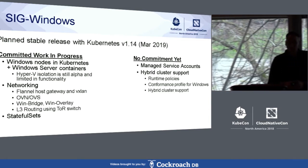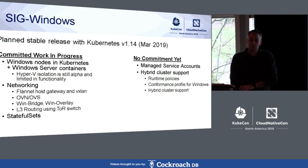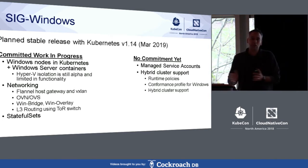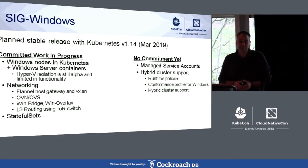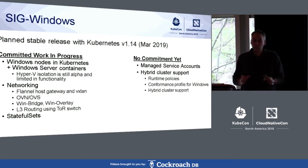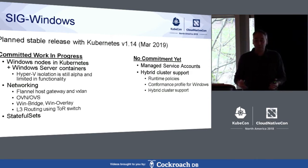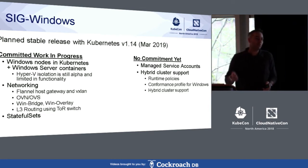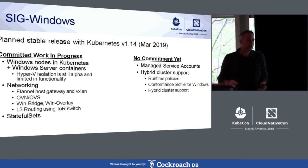When the 1.13 release train was going on, our initial ambition was to go stable with 1.13. Due to a variety of reasons — some of it testing stability — we had to port a lot of our testing infrastructure to the Kubernetes CI engine and just didn't make the cut. Our current planned release is with 1.14 in March of 2019. That's not a done deal; there's still some risk in us getting GA at that release, which is why we're asking more folks to come and join us.